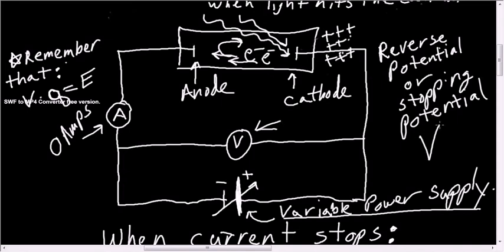This voltage, we'll call it V_S for V stopping, can be used to calculate the energy of the electron. Remember that if I take a voltage and multiply it by a charge, I can get energy. So if I take the voltage of the stopping potential and multiply it by the charge of an electron, I can find the kinetic energy of the electron.